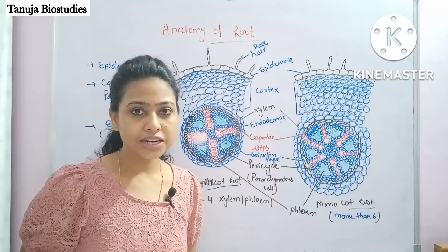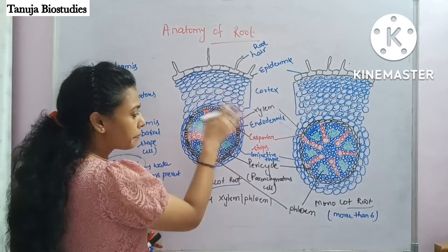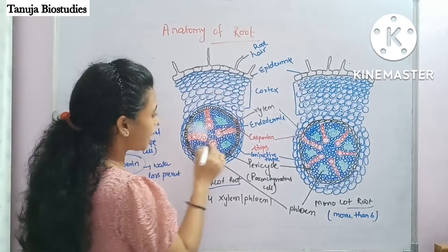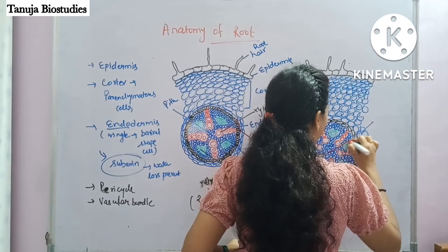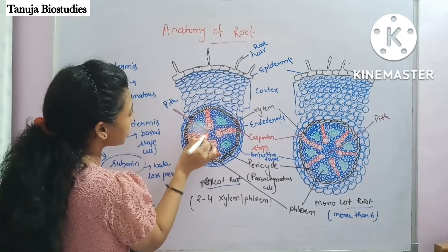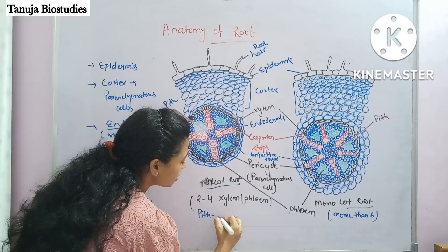Another difference: the center area is called the pith. In the dicot root, the pith is very small and inconspicuous — it is not prominent. In the monocot root, the pith is very large.